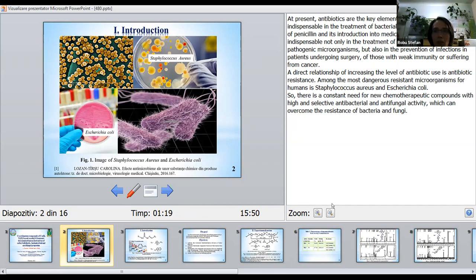Amongst the most dangerous resistance microorganisms for humans is Staphylococcus aureus and Escherichia coli. So there is a constant need for new chemotherapeutic compounds which have selective antibacterial and antifungal activity, which can overcome the resistance of bacteria and fungi.